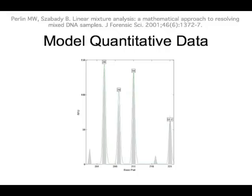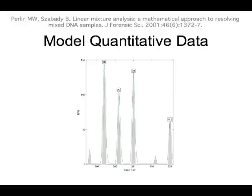Going back to around year 2000 when people were first developing mixture interpretation, the concept was to model the quantitative data. In green you see data from a two-person mixture with a major and a minor component. The goal is to come up with patterns shown as gray triangles underneath. This is explaining the data — quantitative amounts of DNA, stutter peaks, and other quantities — where the gray pattern fits or explains what the green EPG signal is. That's the older approach: modeling quantitative data.